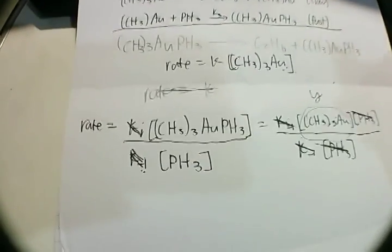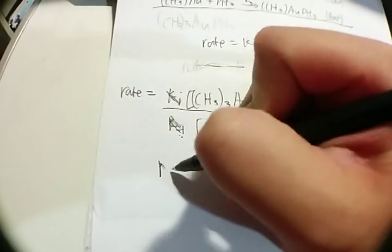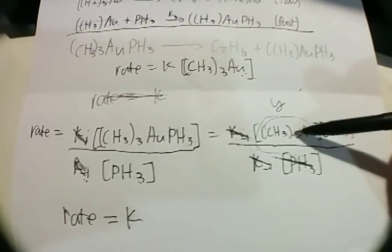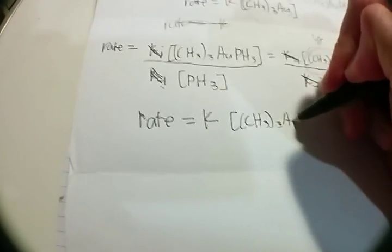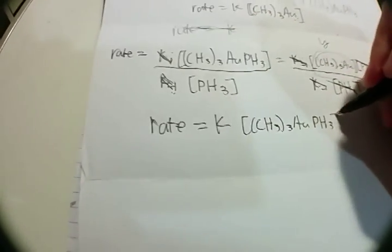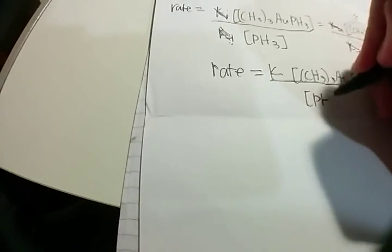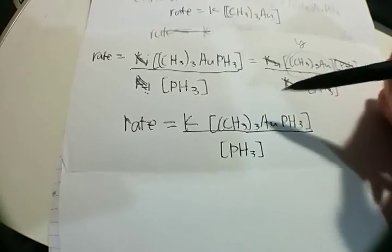Finally, substituting this expression into the rate equation, we get: rate = k × k1[CH3(3)AU][PH3] / (k-1[PH3]). The PH3 in the numerator and denominator cancel, leaving the final rate equation as: rate = k[CH3AU(PH3)]. That is the rate equation for this mechanism.